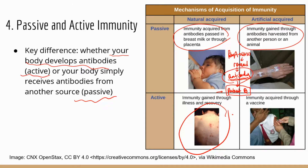Examples of active immunity: if you have been exposed to a pathogen, your body will naturally make antibodies — that's active immunity. Another example is vaccination. Once you receive a vaccine, your body makes antibodies in response because the vaccine usually contains inactivated or dead pathogen, which acts as an antigen. Your body is exposed to the antigen and produces antibodies.